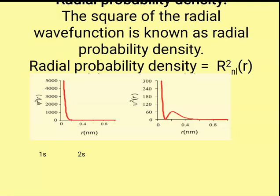In the case of psi squared for 2s, as the distance was less, psi squared was maximum. As the distance starts increasing, psi squared starts decreasing until a stage comes when psi squared becomes zero — that is referring to the node. Again, when r starts increasing, psi squared starts increasing, reaches a maximum, and again starts approaching nearly zero.